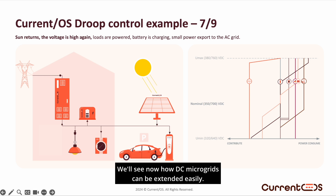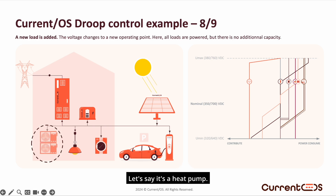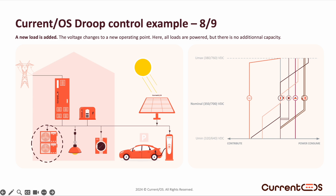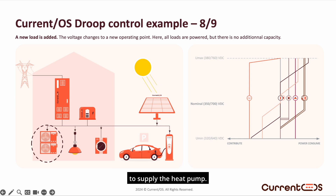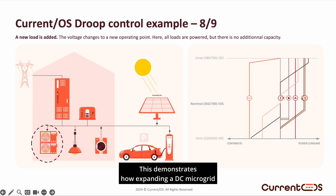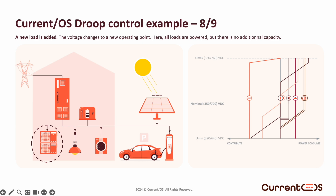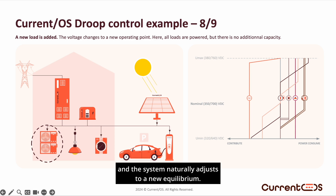We'll see now how microgrids can be extended easily. Let's add a new load similar to an electric vehicle in terms of nominal power, but for a different purpose — let's say it's a heat pump. In the theoretical diagram on the right, a new curve appears and the system finds a new equilibrium. At this point, there is no longer enough power to charge the battery or export to the grid, but there is enough to supply the heat pump. This demonstrates how expanding a DC microgrid with Current OS distributed control simplifies the process significantly. There's no need to adjust both the electrical and automation systems or involve multiple skill sets — the electrician simply connects the new device and the system naturally adjusts to a new equilibrium.